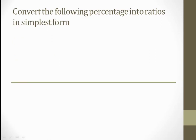Convert the following percent into ratios in simplest form. Our first question is 1 whole number 3 upon 4. First I write it as an improper fraction: 4 ones are 4 plus 3, giving 7 by 4 percent. To remove the percent sign, I divide by 100, so 7 by 4 multiplied with 1 over 100. 7 times 1 is 7 and 4 times 100 is 400, giving 7 upon 400. In ratio form: 7 is to 400.